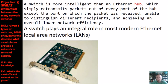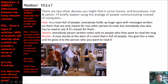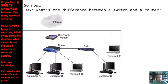A switch plays an integral role in most modern Ethernet LANs. Hubs are unable to distinguish between different recipients, achieving an overall lower network efficiency. I had a great example in a previous lesson comparing a hub, switch, and router to people at a party — you can pause and read that to refresh your memory. Now I want you to make a logical inference and tell me what the difference between a router and a switch is.